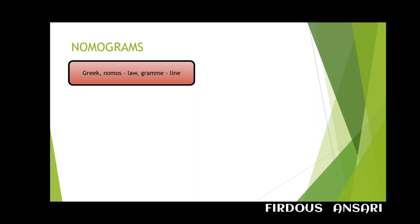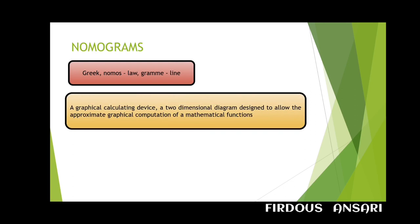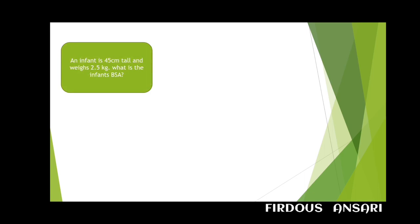Now we'll look at what a nomogram is. In Greek, 'nomos' means law and 'gram' means line. By definition, it is a graphical calculating device — a two-dimensional diagram designed to allow the approximate graphical computation of mathematical functions. It uses three lines: the outer two lines contain the known parameters, and the middle line contains the unknown parameter.